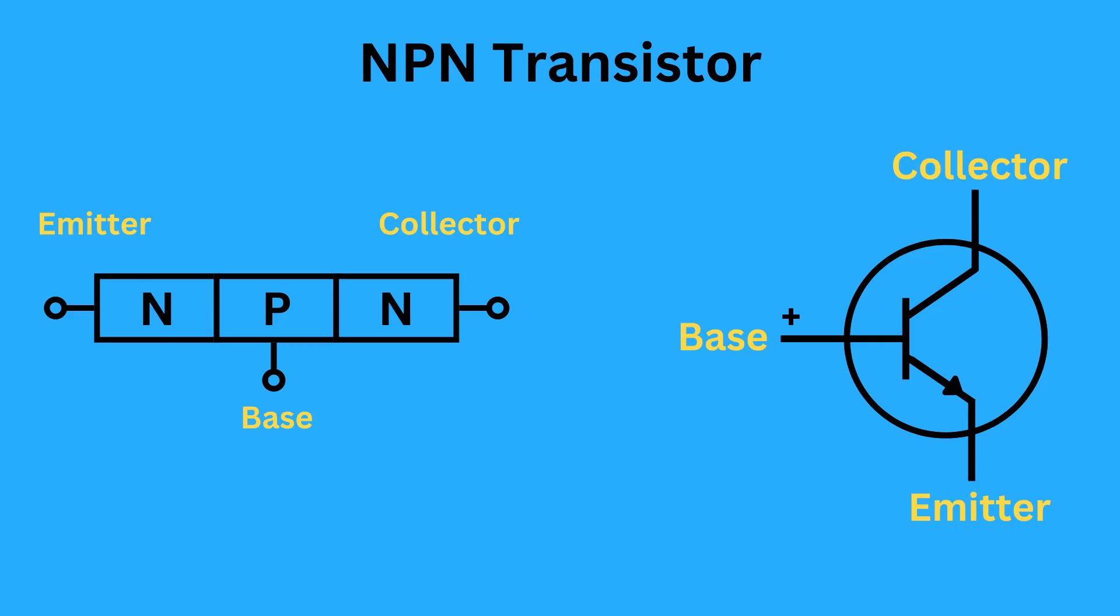They consist of two N-type semiconductor materials, separated by a thin layer of P-type material. When a small current flows into the base terminal, it allows a larger current to flow from the collector to the emitter. The current flow is controlled by the voltage difference between the base and the emitter.